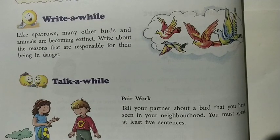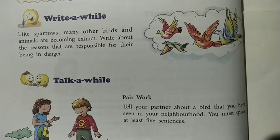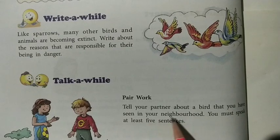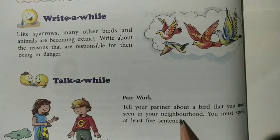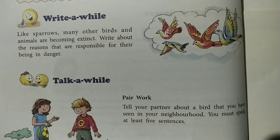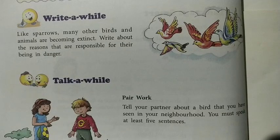Talk a While — pair work: tell your partner about a bird you have seen in your neighborhood. You must speak at least five sentences. You can perform this activity with your elder brother, elder sister, or parents — tell them about any unique bird you have seen.